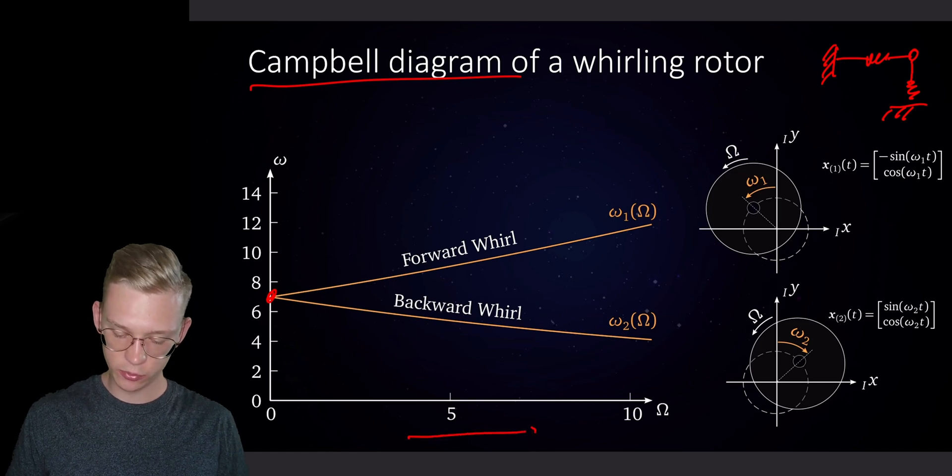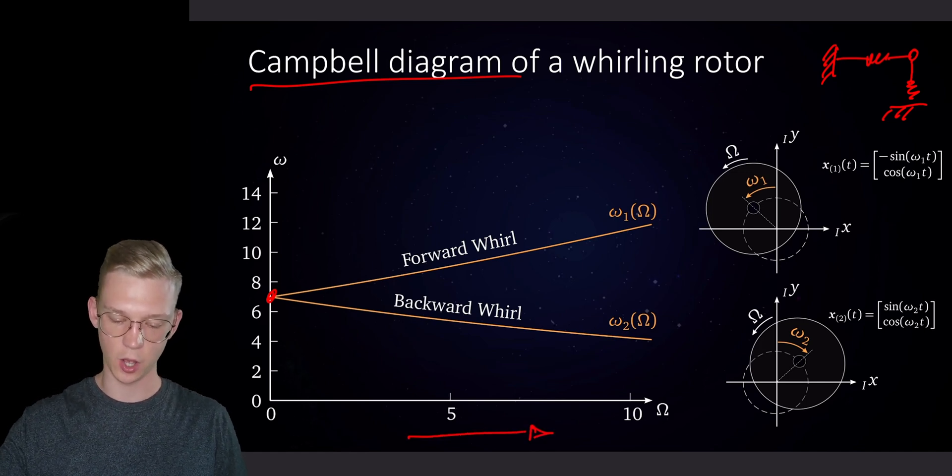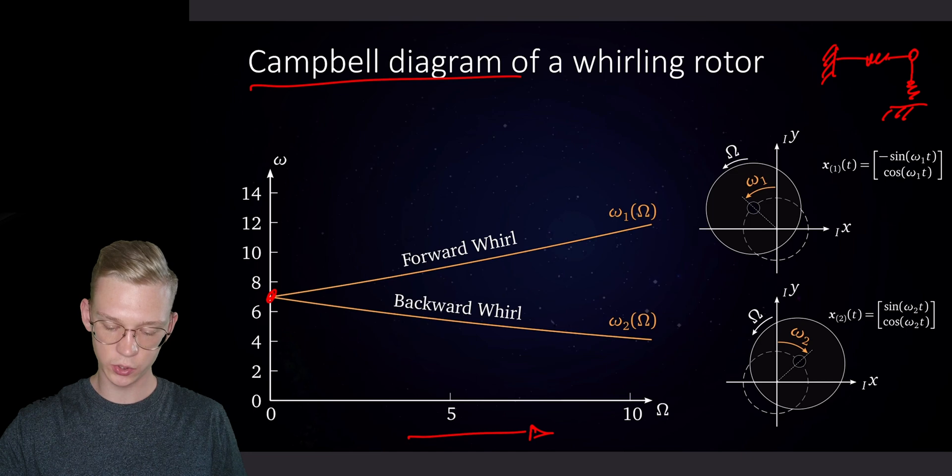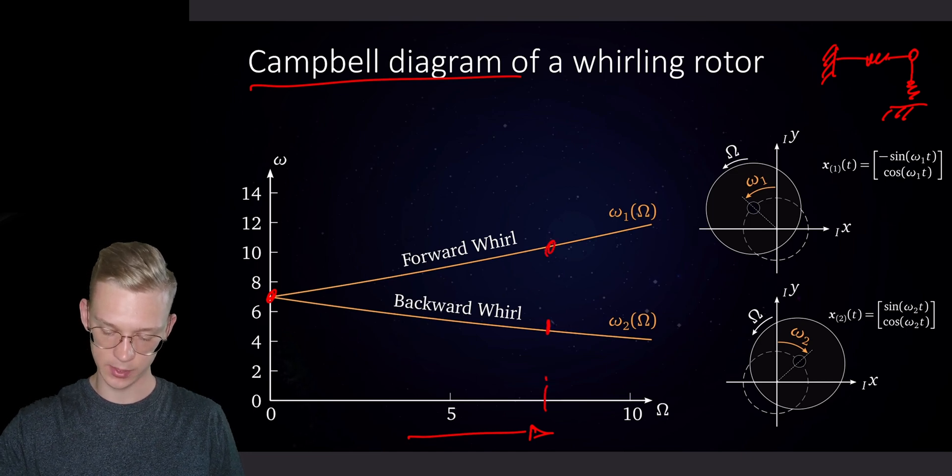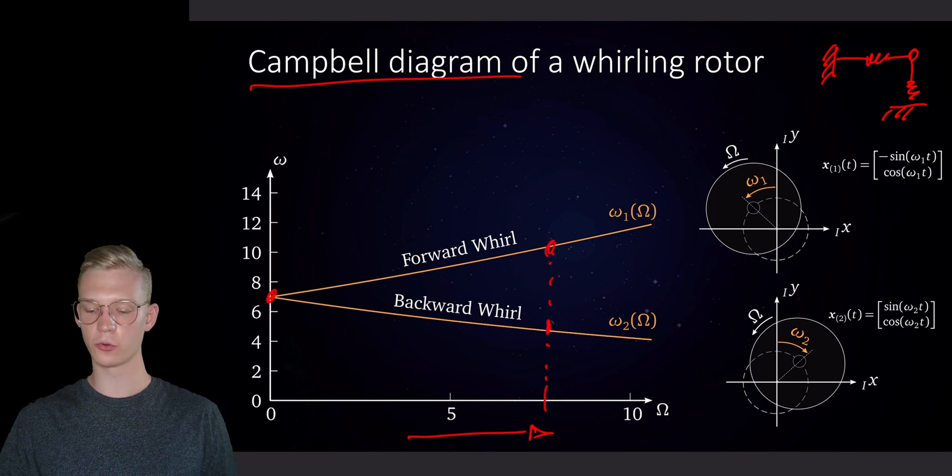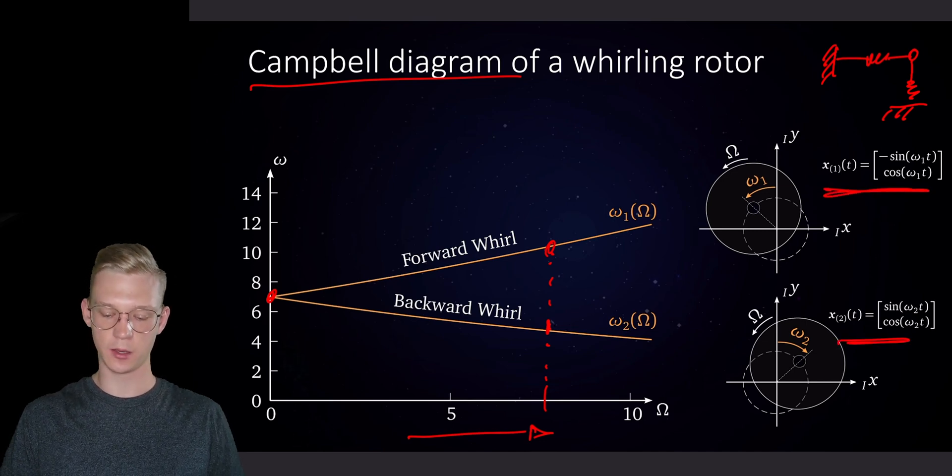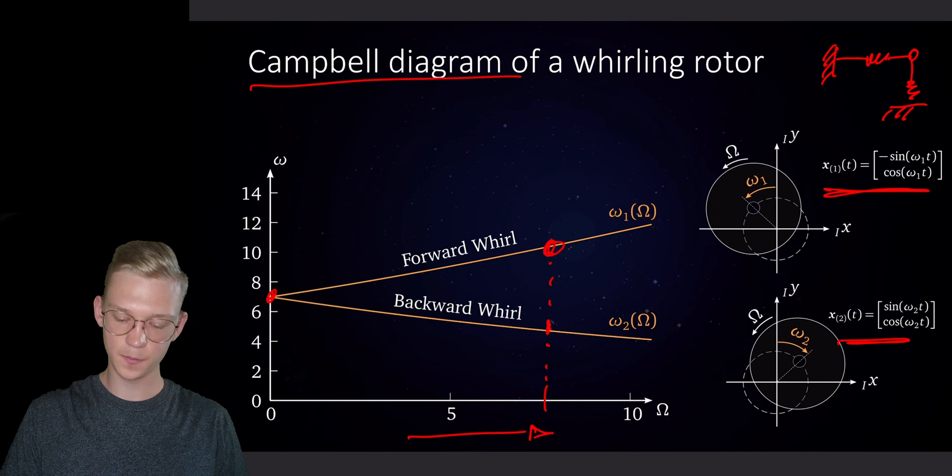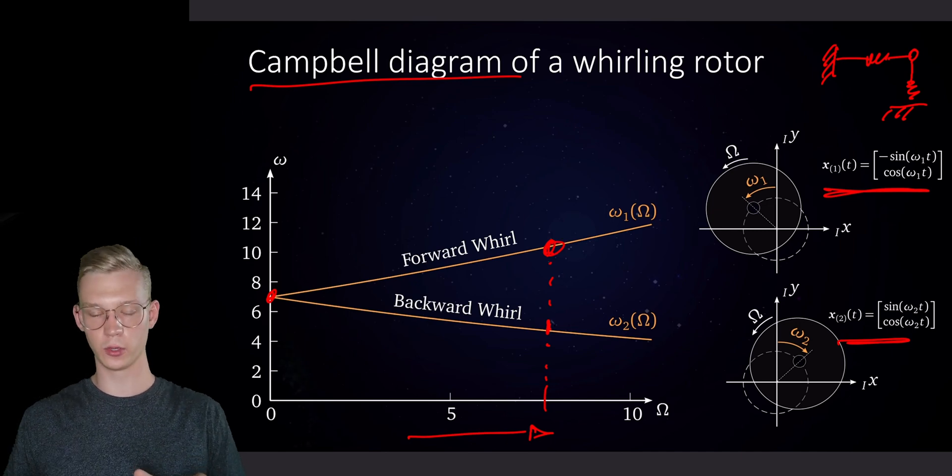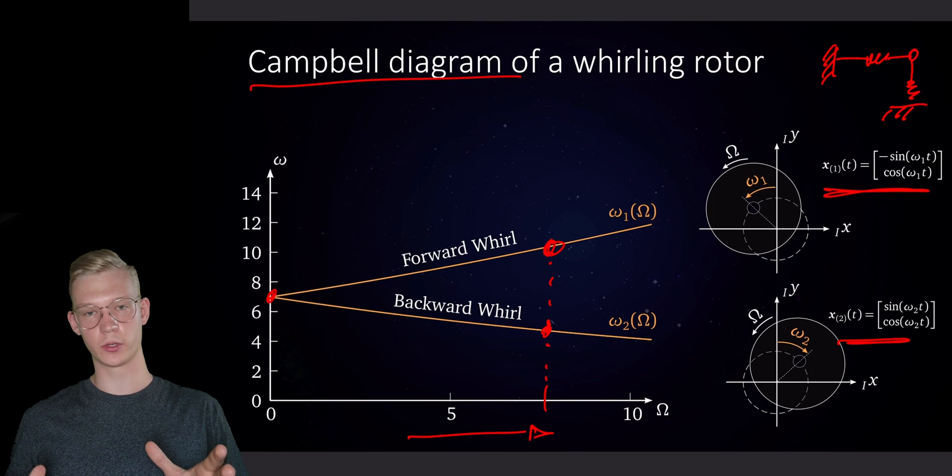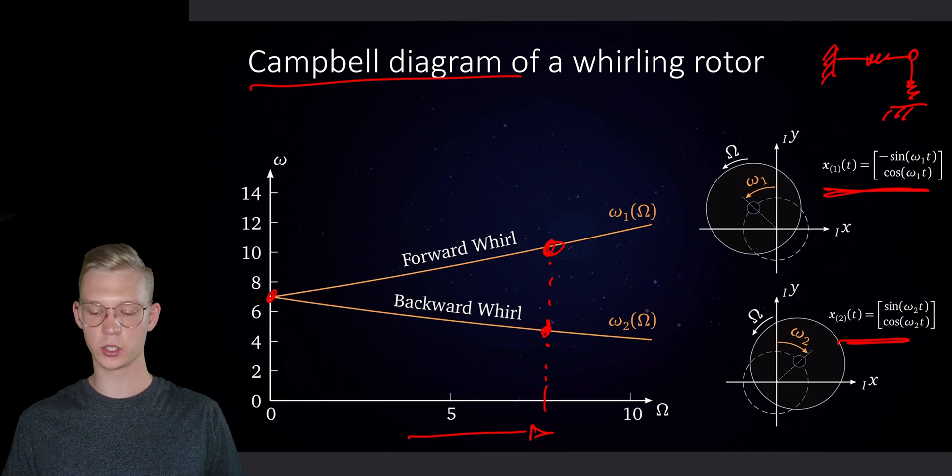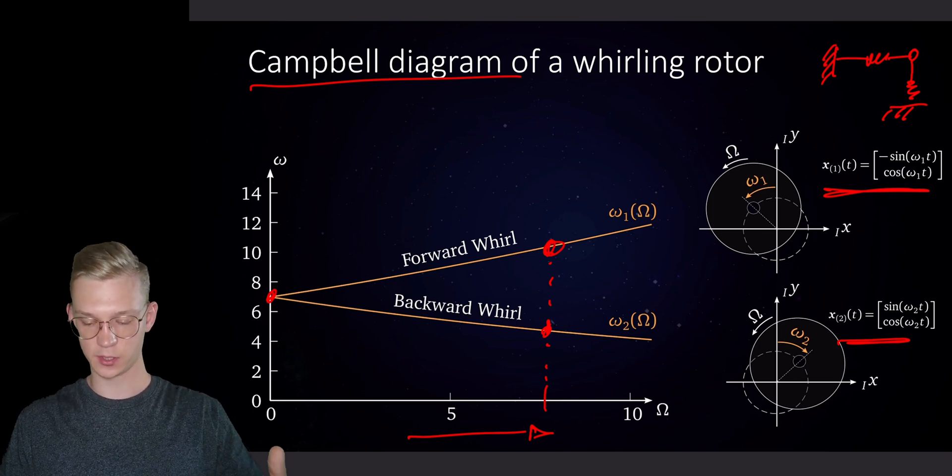So if we have an increasing rotation speed of our rotor, we will get two distinct eigenfrequencies and of course the corresponding eigenvectors. And the larger one is called the forward whirl and the lower eigenfrequency is called the backwards whirl. So how can you imagine that system or that solution?